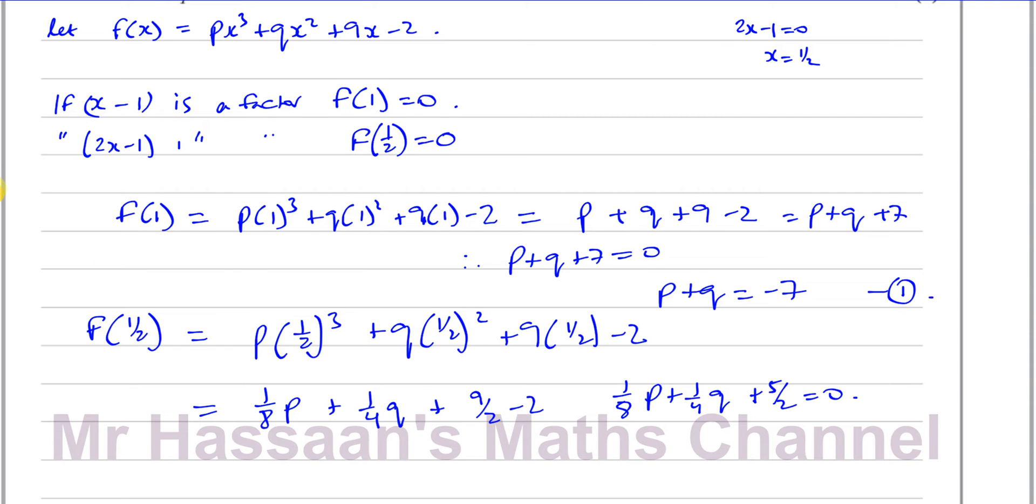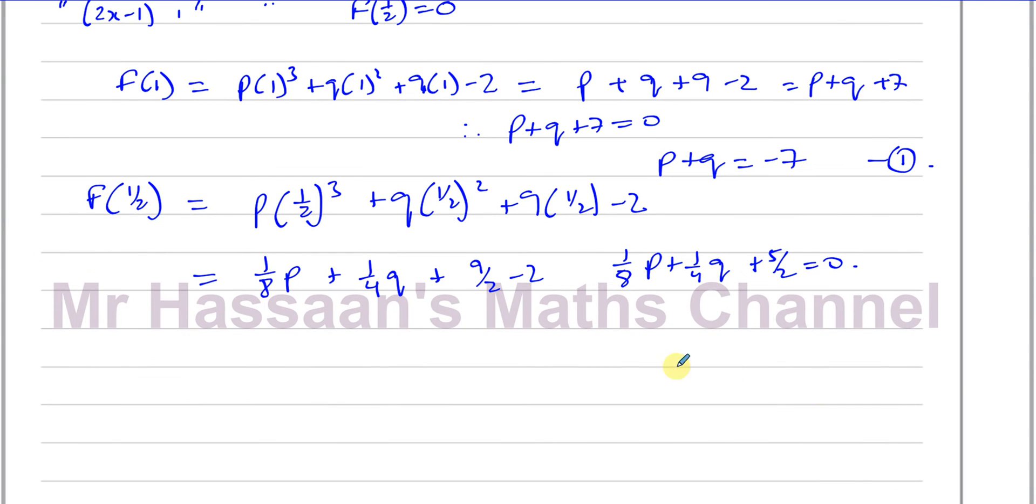That's 4 and a half minus 2. So that therefore will give us the equation 1/8 p + 1/4 q = -5/2. Now to make this equation a bit simpler so I don't have to deal with fractions, now I have this as an equation, we can multiply everything by 8. That will eliminate the fraction.